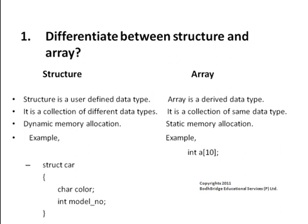In the example for arrays: int a[10], where 10 is the index of the array a. The difference between structure and array is that in the structure example two types of data types are used, whereas in array only one data type can be used.